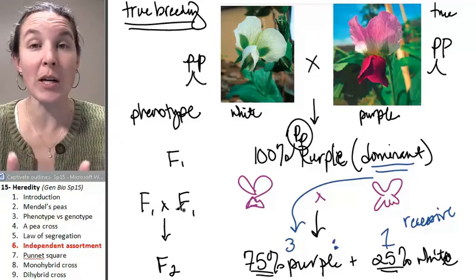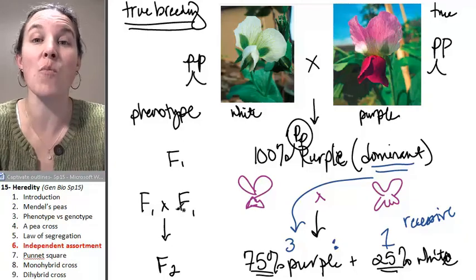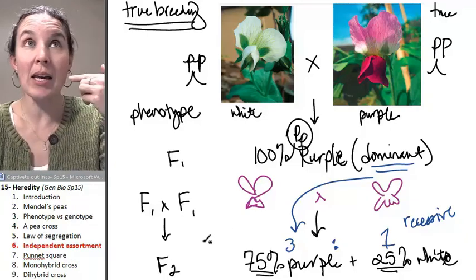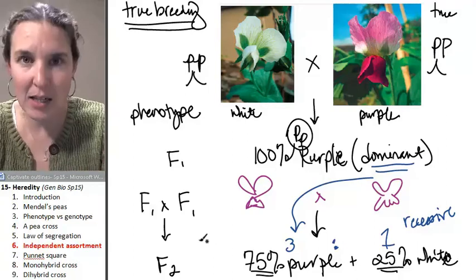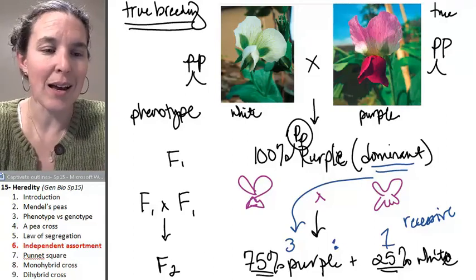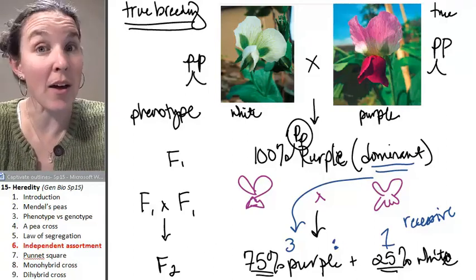We have a tool called the Punnett square that's going to help us solve problems around heredity, and we can understand the Punnett square because we understand meiosis. I'll be right back to show you how the Punnett square works.